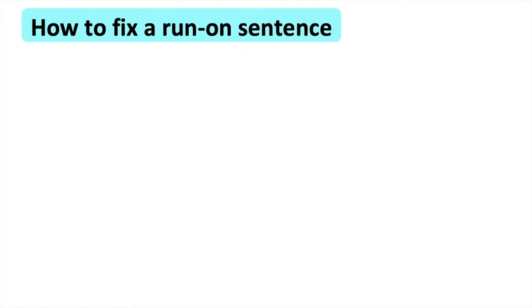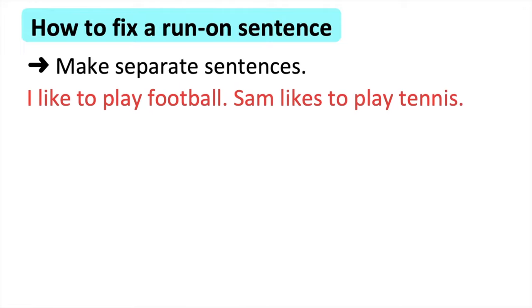There are three ways in which you can fix a run-on sentence. The first is to make two separate sentences like this. I like to play football. Sam likes to play tennis. The full stop indicates the end of the sentence.